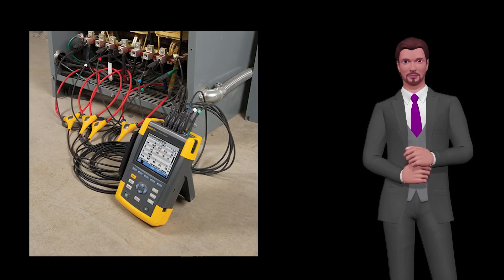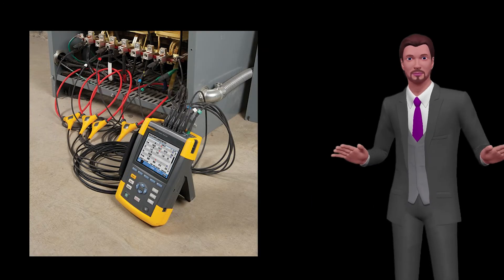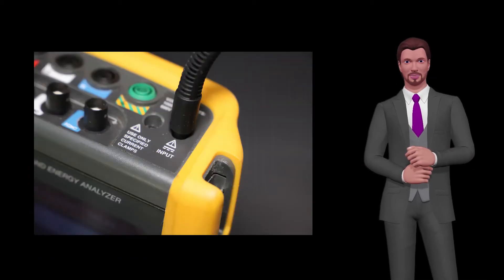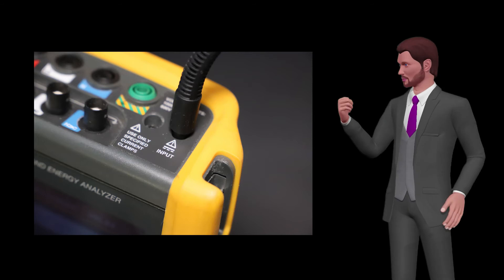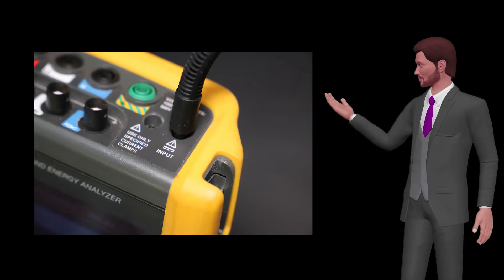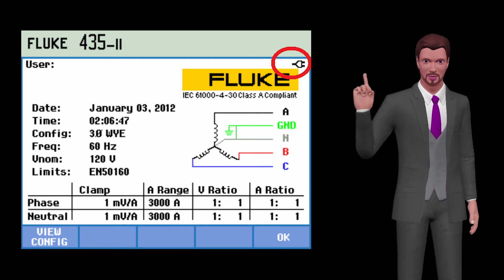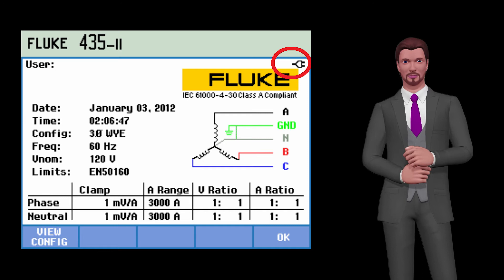Before finishing the installation, check the wiring again. In the event that we are going to do a long registration, it will be convenient to connect the power supply to the equipment. Once this is done, we can turn on the equipment and verify that the screen actually shows that the analyzer is powered from the mains. In this way we will avoid discharging the internal battery and stopping the recording.